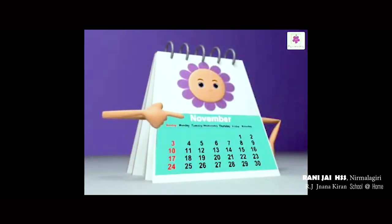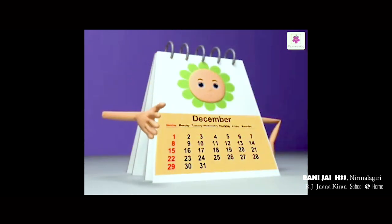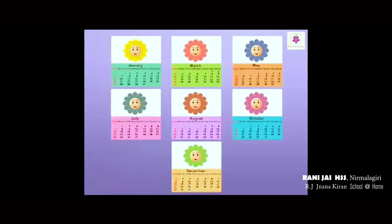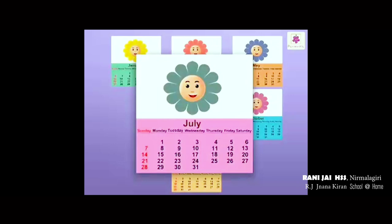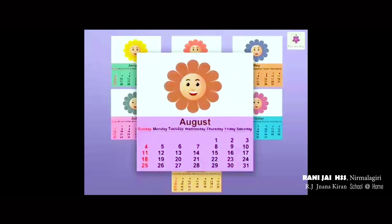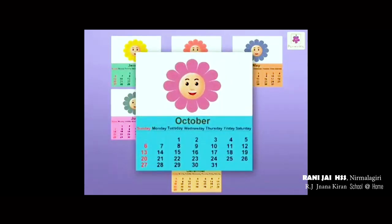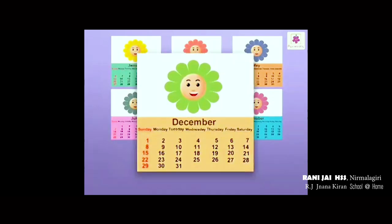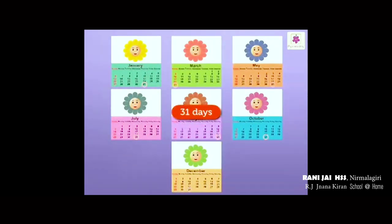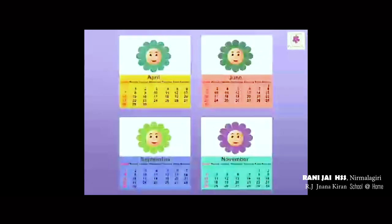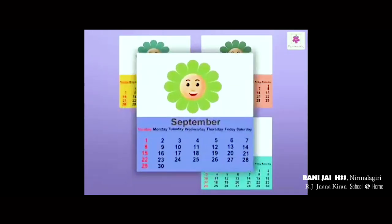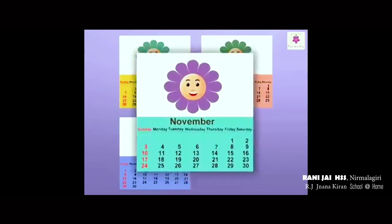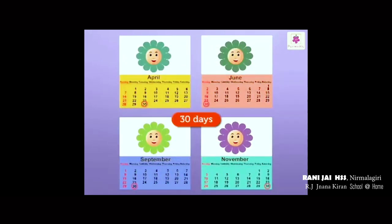The months of October, November, and December. The months of January, March, May, July, August, October, and December have 31 days. The months of April, June, September, and November have 30 days.